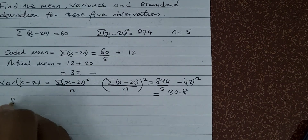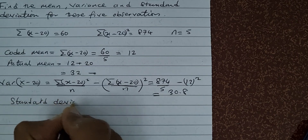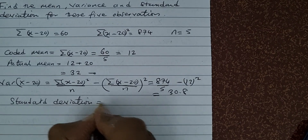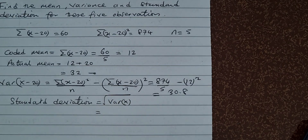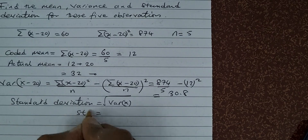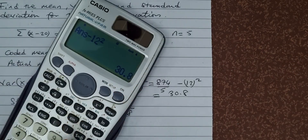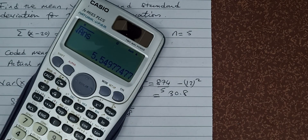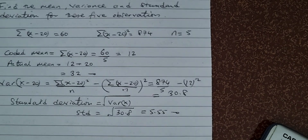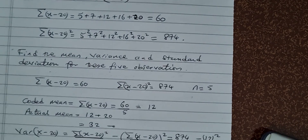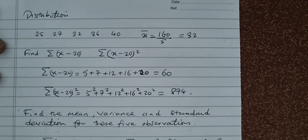Now the standard deviation. The standard deviation sigma is the square root of the variance of these values — x minus 20, basically. So we're going to find the standard deviation, which is the square root of the variance. Take the square root of 30.8 and you reach 5.55. So the answer is 5.55. This is how we find the mean, variance, and standard deviation of summation of values.